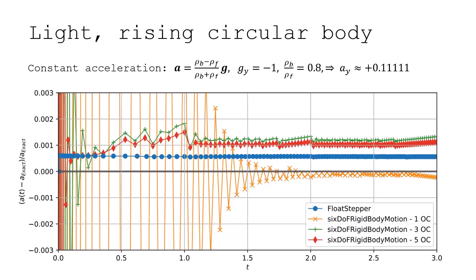So the first one here, the yellow one, you see that this is a signature of the added mass instability, these wild jumps up and down. Can we improve it by increasing the number of outer correctors, which is a painfully expensive operation? Well, we can sort of squeeze the oscillations in, but we don't get rid of them. But we do with FloatStepper.